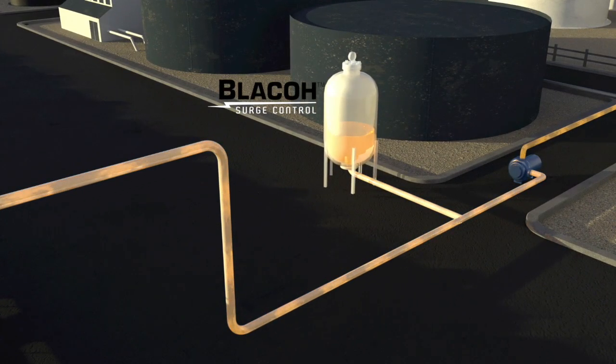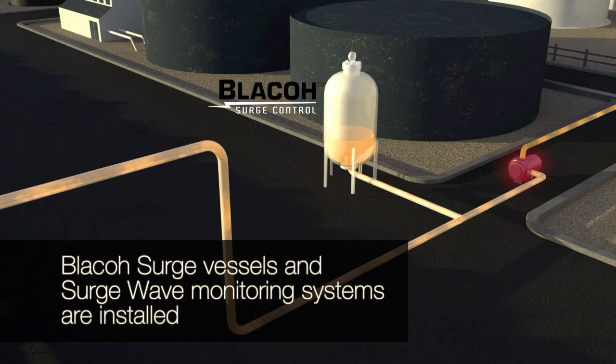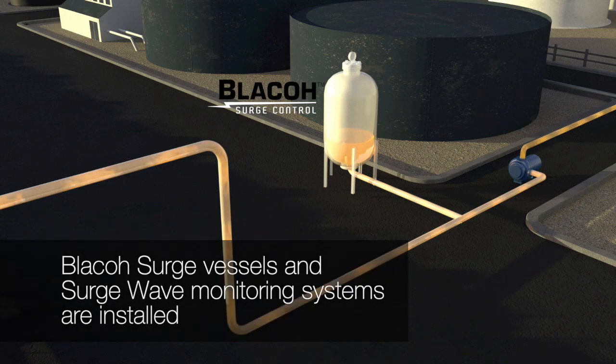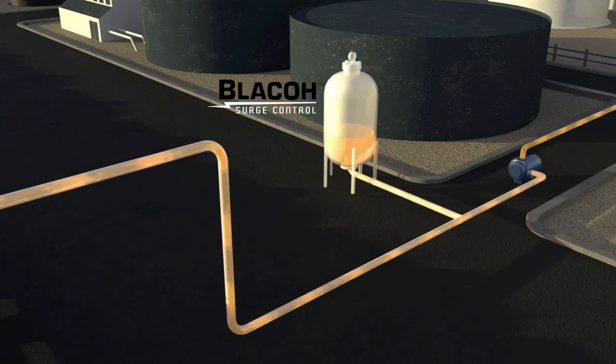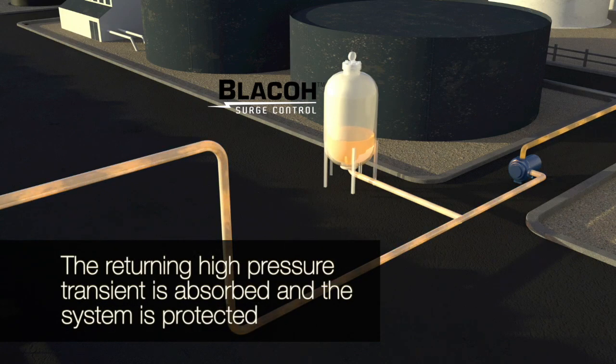When Blago surge vessels are installed near the pump discharge and there is a pump trip, fluid is released from the vessel. The added fluid prevents the system from dropping below vapor pressure. The fluid energy caused by the returning high-pressure transient is absorbed by the vessel.